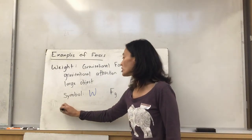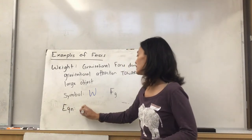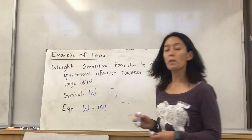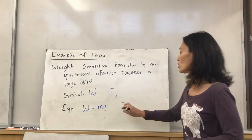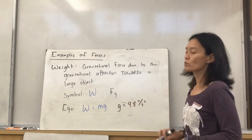In terms of the equation, here's our first equation for a force. Weight is equal to MG, or mass times gravity, where G is equal to 9.8 meters per second squared.